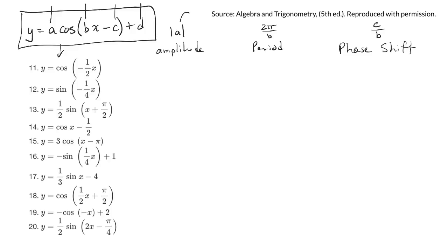To figure out the amplitude, it's always just the absolute value of A. So whatever number's out front, that's what the amplitude is. To figure out the period, you go 2π divided by B. That'll give you the period.